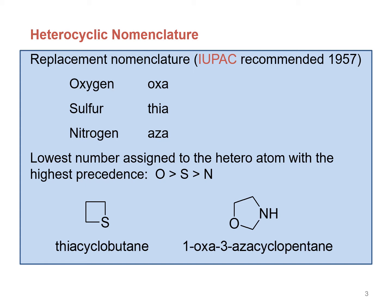Heterocyclic compounds are the derivatives of the parent homocyclic compound. For example, thiocyclobutane — in this compound the heteroatom is sulfur, and this compound is the derivative of cyclobutane. So according to this nomenclature we name it thiocyclobutane.